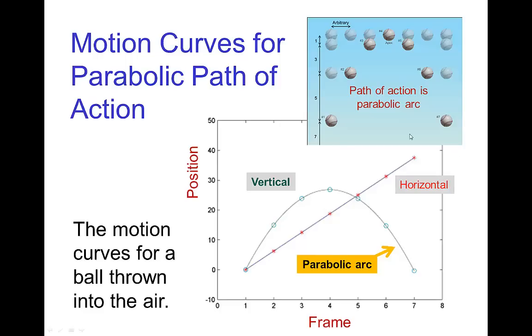And in fact, if we have something that's flying through the air and we see the path of action, say this ball flying through the air has a path of action that's a parabolic arc. And then the motion curves in the graph editor, the motion curve for the horizontal position would be a straight line, but the motion curve for the vertical position is again a parabolic arc.